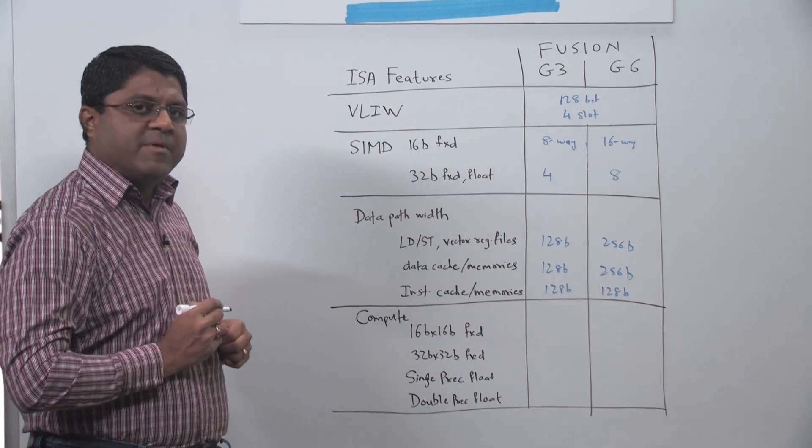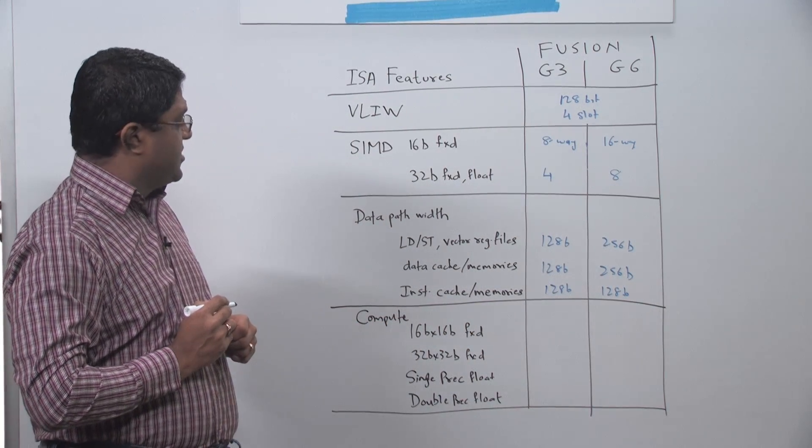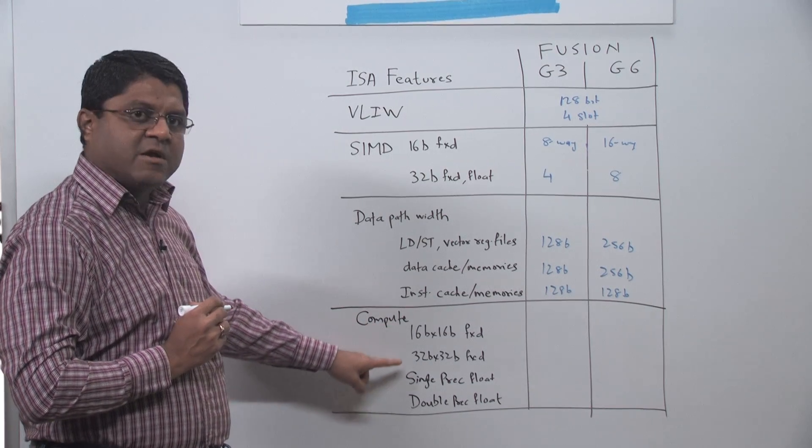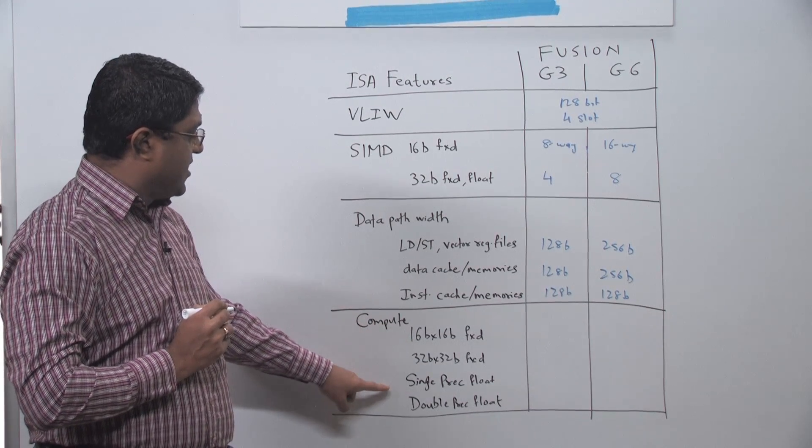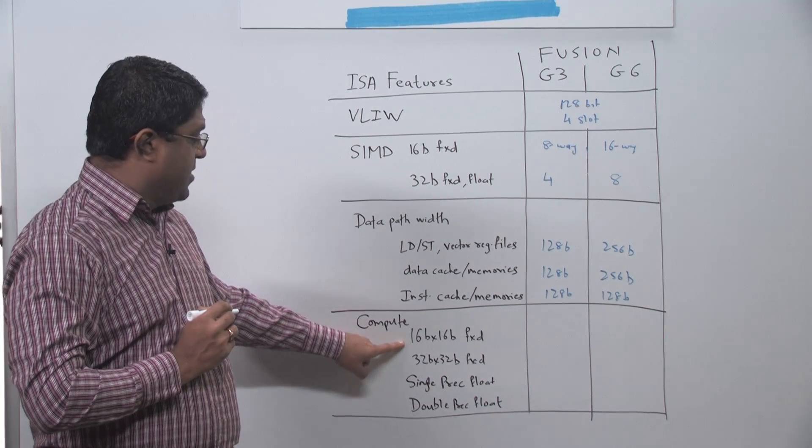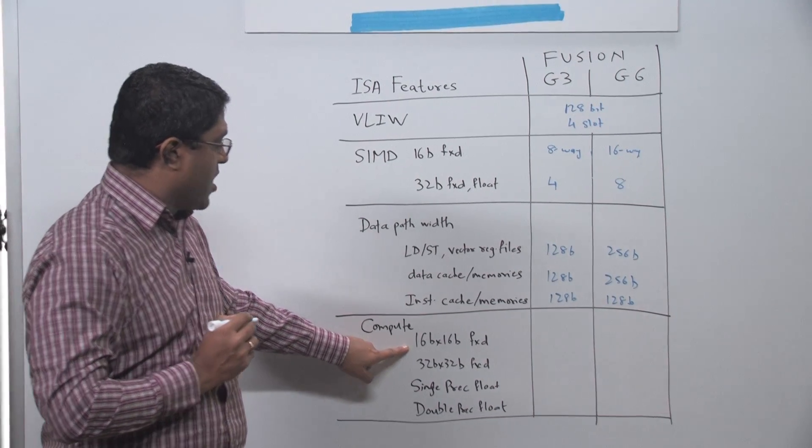The compute capabilities, both the Fusion G3 and G6 support a number of different data types of fixed point as well as floating point. For 16-bit fixed point multiplies,